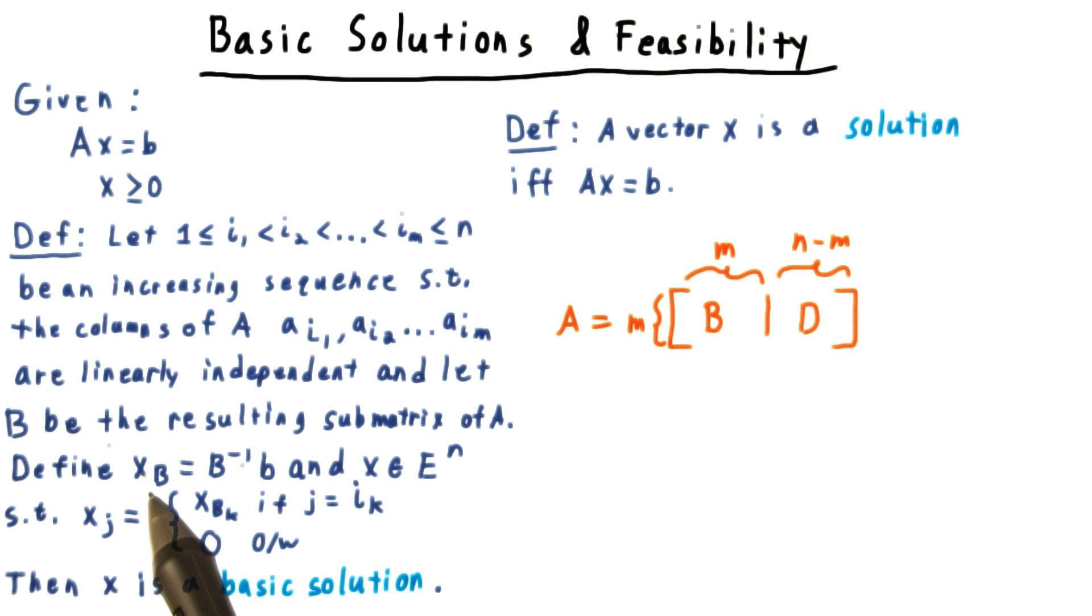We define xB to be B inverse times this b here, and then embed this in a longer vector x, putting the value from xB for columns in the sequence and zero otherwise. This x is a basic solution.